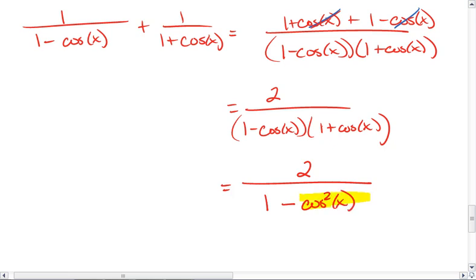Something should jump out at you. Cosine squared x. Let's think about our Pythagorean identity. We know that cosine squared plus sine squared equals 1. If we rearrange this, we then see that 1 minus cosine squared equals sine squared.